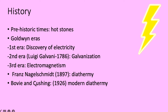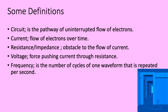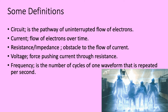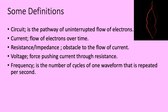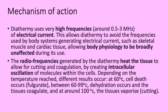A circuit is a pathway of uninterrupted flow of electrons, while current is the flow of electrons over time. Resistance is the obstacle to flow of current, voltage is what pushes current through resistance, and frequency is the number of cycles of one waveform repeated per second. Diathermy uses very high frequencies, around 0.5 to 3 megahertz of electrical current.